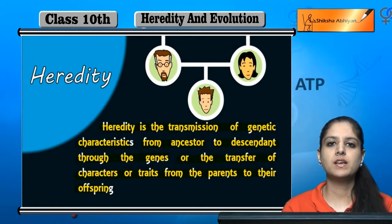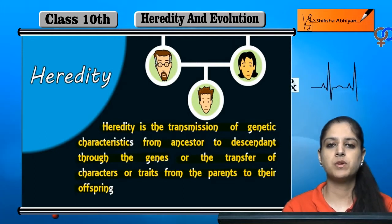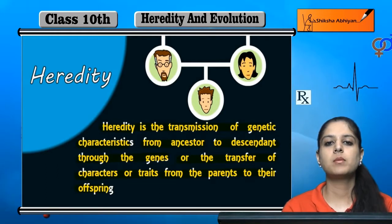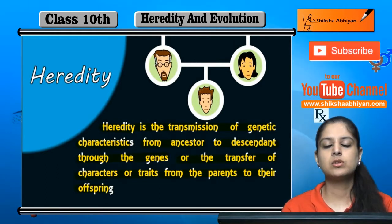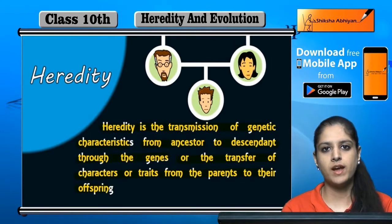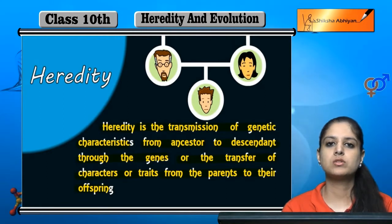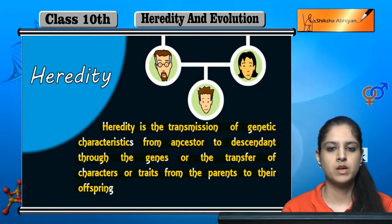So heredity kya hai? Transmission of genetic characteristics — the genetic characteristics parents se offspring ke andar jaate hain, transmit hoti hain. Or we can say transfer from ancestor to descendant, meaning from parent to child, or some kind of organism which was in a time and its coming organisms were transmitted.